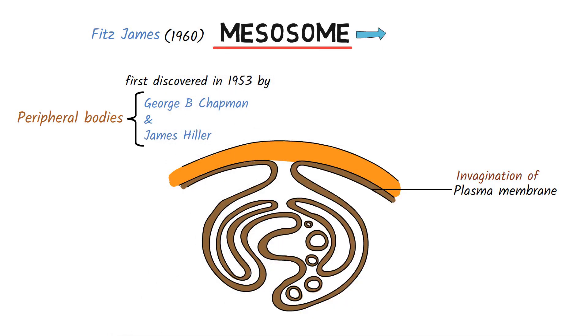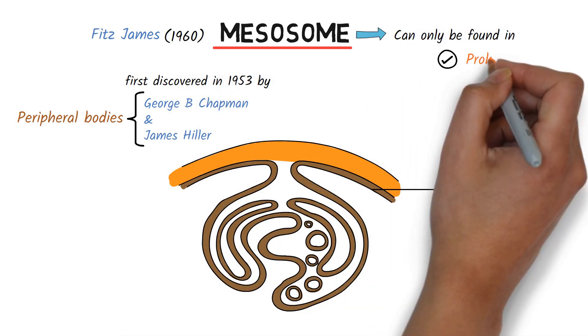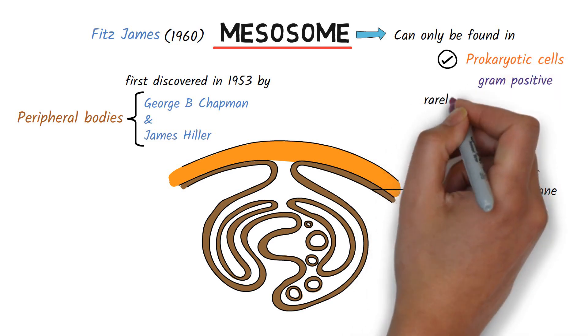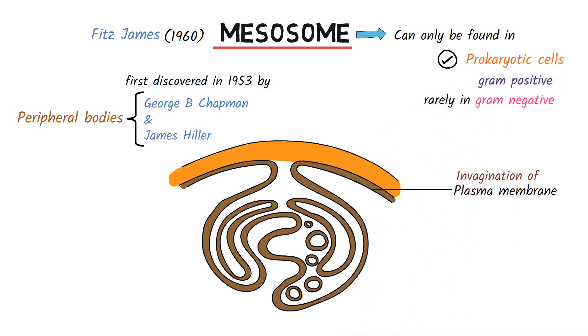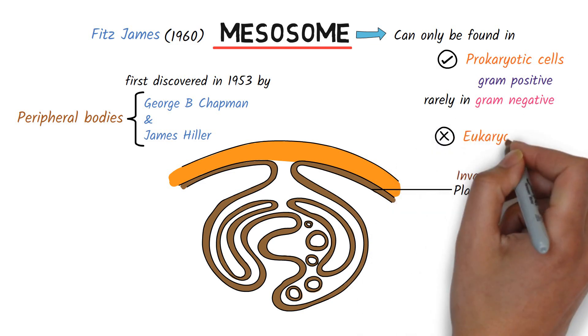Mesosomes can only be found in prokaryotic cells, specifically in gram-positive bacteria, and are rarely found in gram-negative bacteria. Mesosomes are absent in eukaryotic cells.